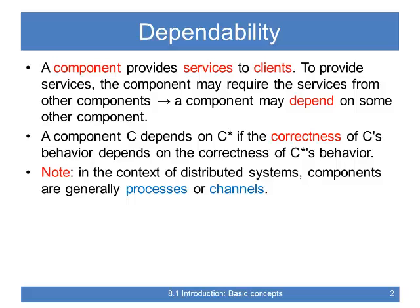So this is the abstract view. You've got a component — actually a series of components — and every component provides services to clients. In order to do that, a component may require the services of other components. If you think in terms of layered architectures: if a layer needs to provide a service to a higher level layer, it's going to depend on services of a lower level layer.